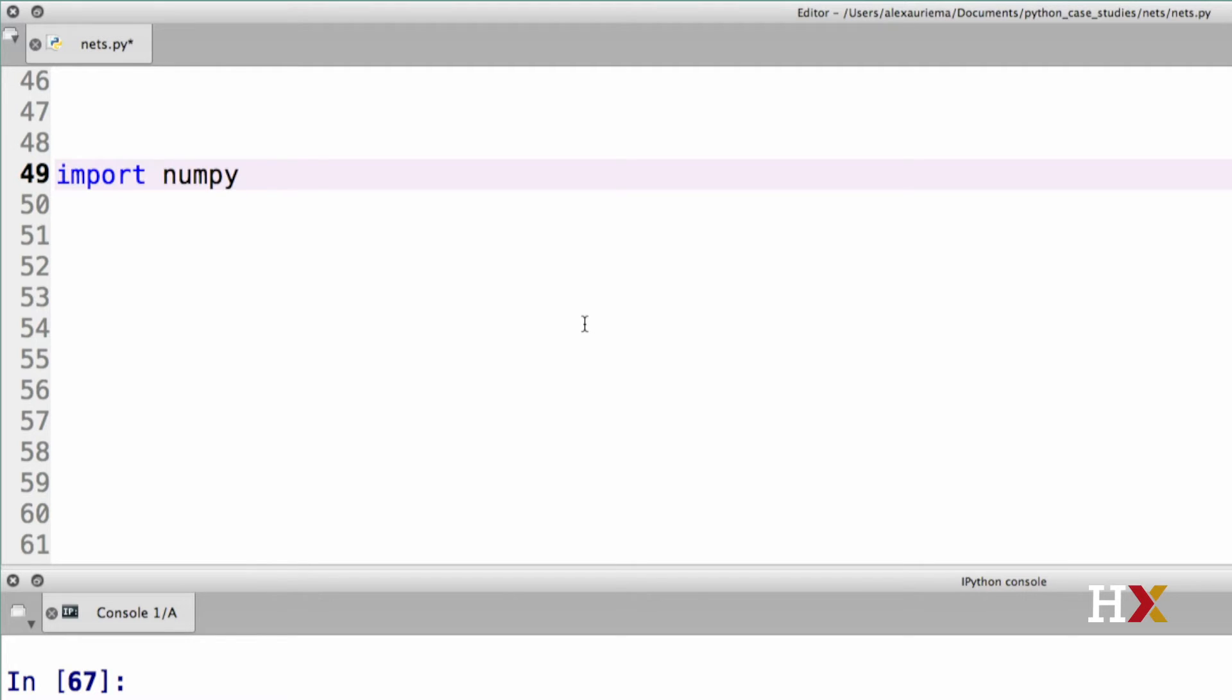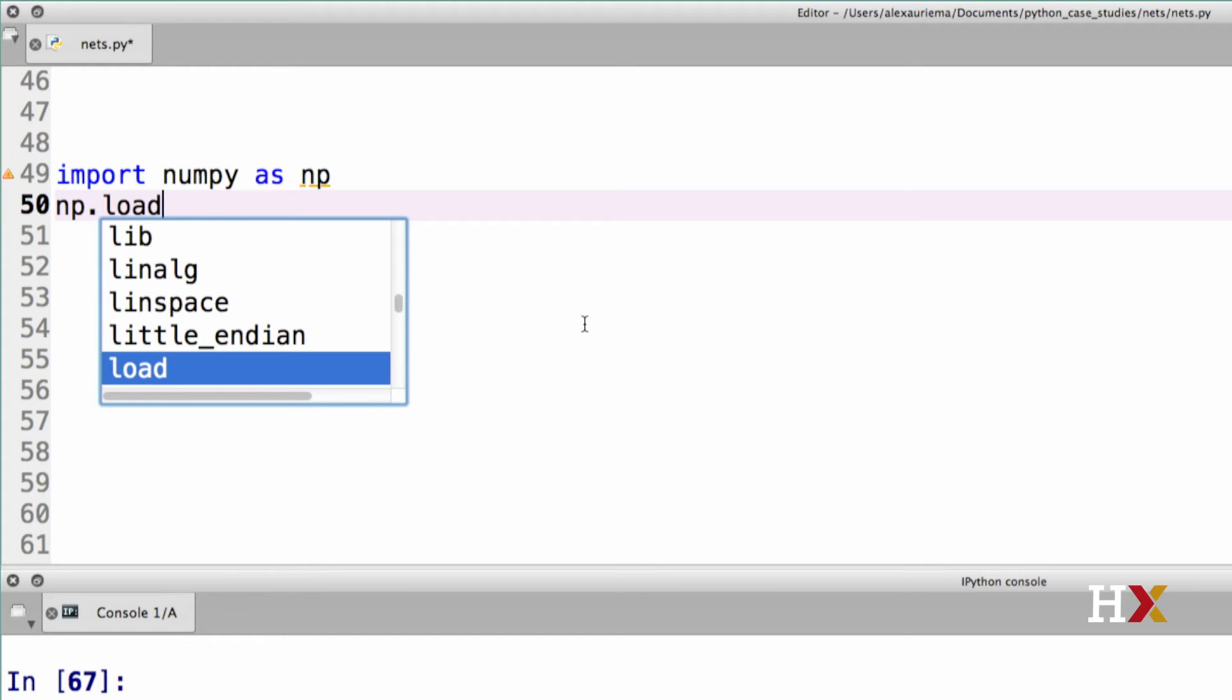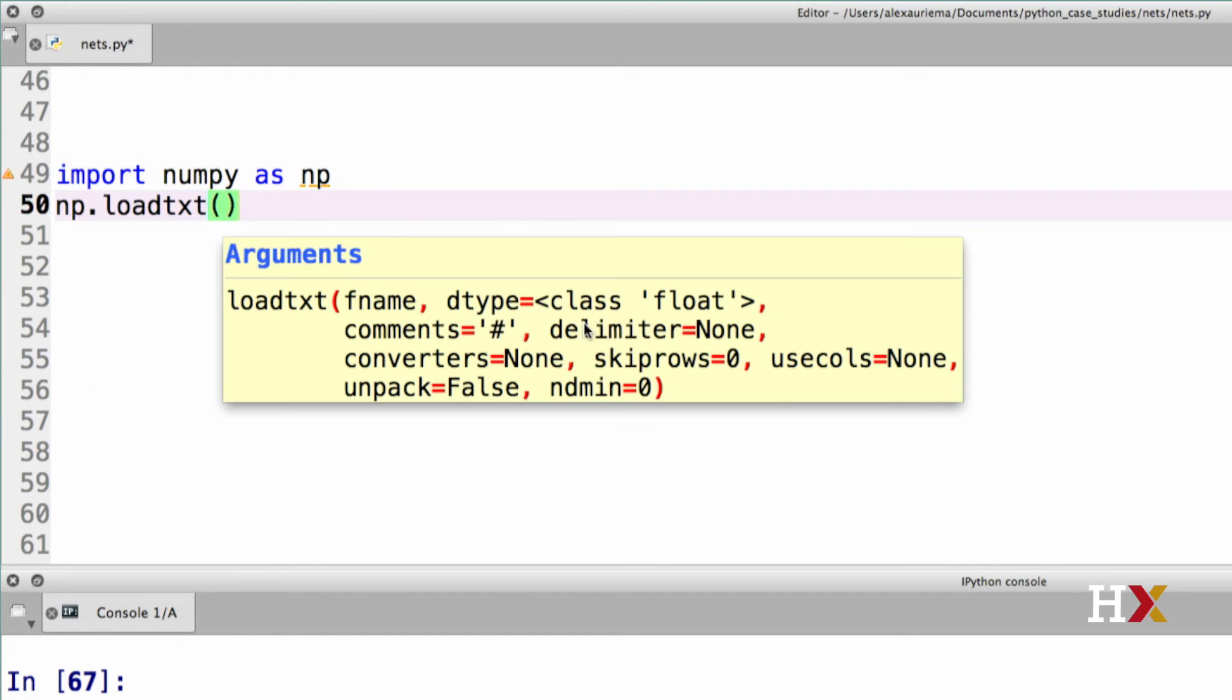We will first import numpy as np. We'll be using the np.loadText function to read in the file. The first argument is going to be the file name, which looks a little bit complicated. And the second argument is going to be the delimiter. In this case, it's a comma, so we set that equal to a comma, and make sure to surround the comma with quotes.